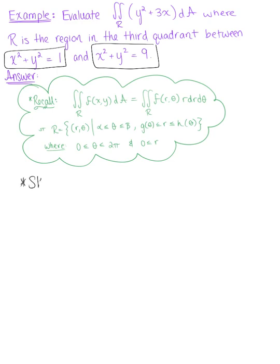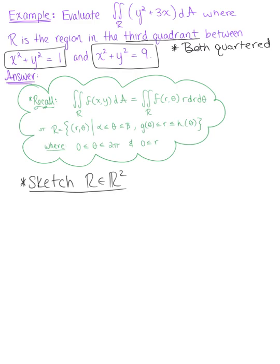Let's start by sketching this region. Let's make a note of our two bounding curves. We can see that they are both quarter circles, because we're bounded in the third quadrant, and they're both quarter circles centered at the origin, with different radial lengths. Our first bounding curve has a radius of 1, and our second bounding curve has a radius of 3.